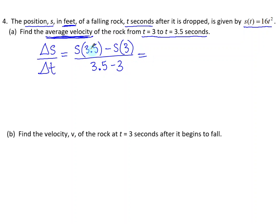The position at 3.5 is when we plug 3.5 into our position function, so 16 times 3.5 squared, and then the position at 3 seconds is 16 times 3 squared divided by 0.5 seconds, 3.5 minus 3.